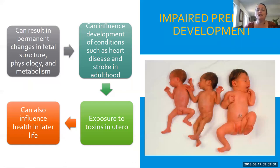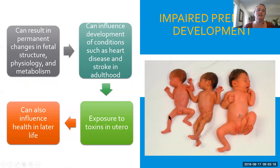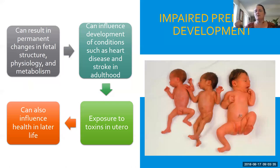Sometimes we can see impaired prenatal development because of mom not having enough nutrients or having exposure to infection. These two babies are around the same gestation, and you can see one obviously did not get enough and the other got maybe a little more than it needed. What happens prenatally can actually influence what happens later in life — things like heart disease, stroke, exposure to toxins in utero, and changes in metabolism. A baby born to a diabetic mother has a much higher chance of having diabetes later in life.